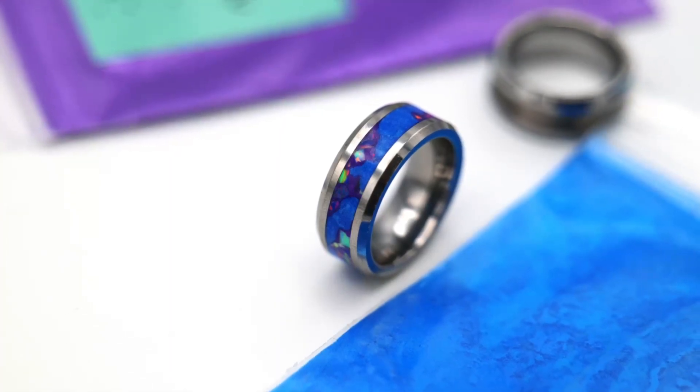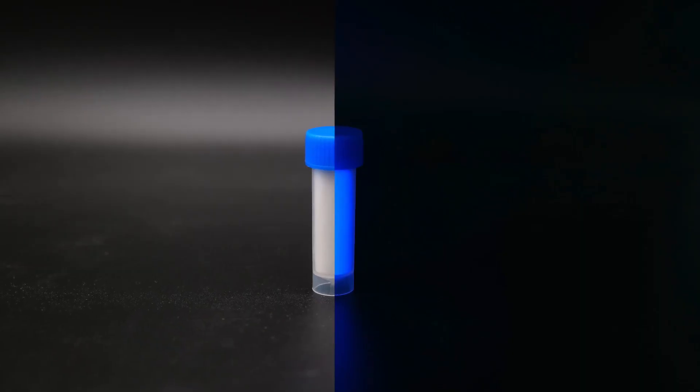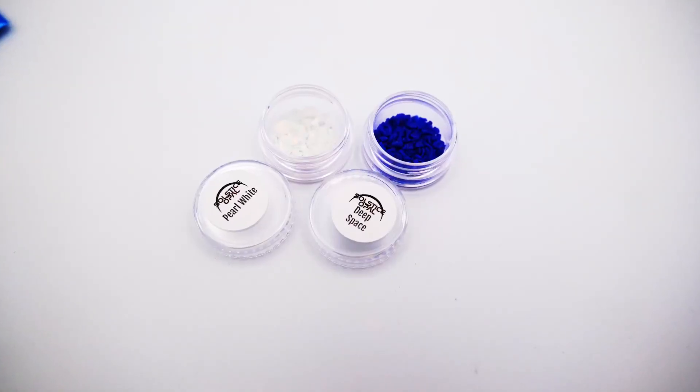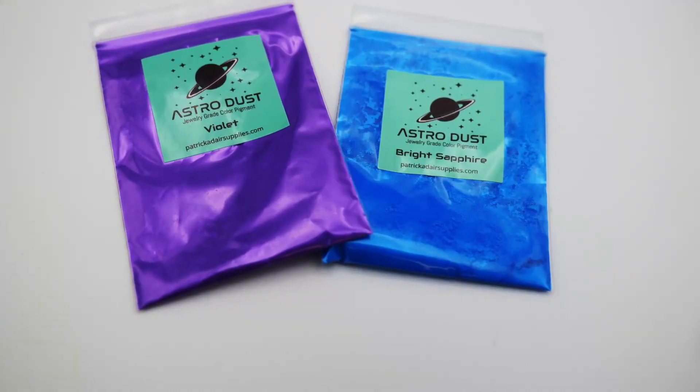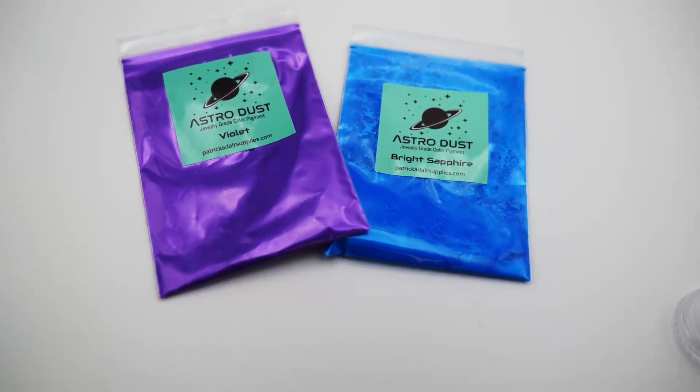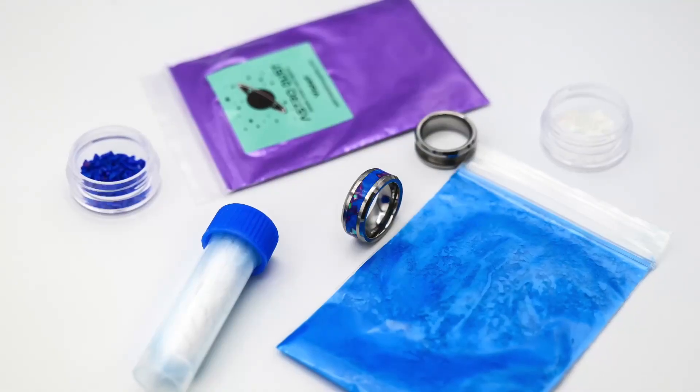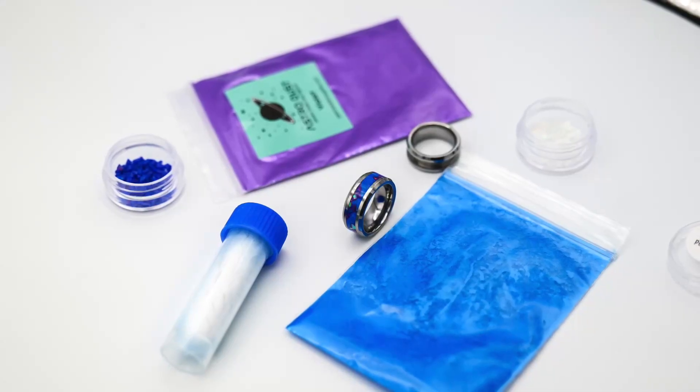Hey guys, this is Danny with Patrick Adair Supplies. Here for the July subscription box, this one is the crystal mountain. We're gonna be trying our best to create mountains within our ring. It's such a grand idea, something so large fitting into something so small that I was really intrigued with how we could pull this off. I think we did an all right job pulling off the look that we were hoping for and managed to create mountains within our eight millimeter ring blank.